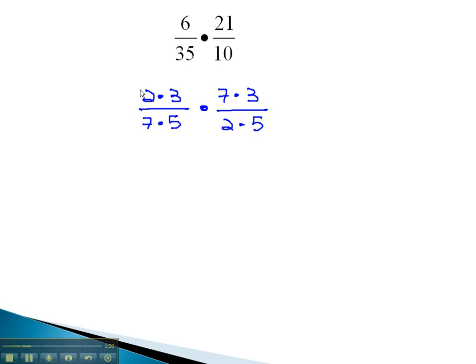We can now reduce out those common factors of 2 from the numerator and denominator, and 7 from the numerator and denominator. To get our final answer, we just multiply across 3 times 3 to get 9, and 5 times 5 to get 25. 9 over 25 is our final solution.